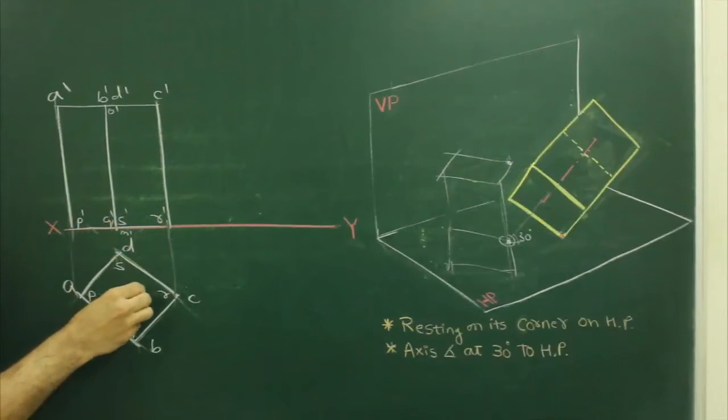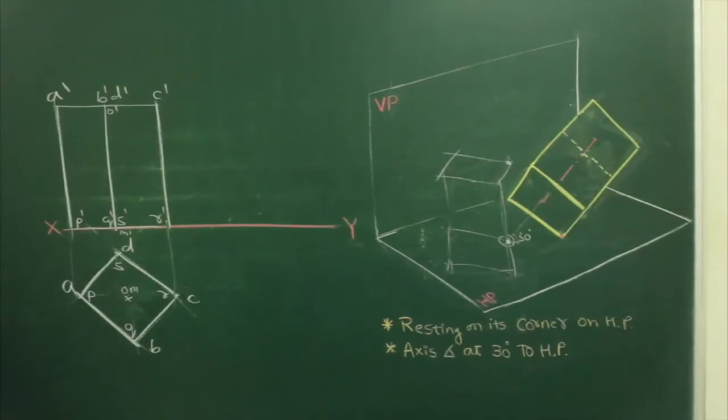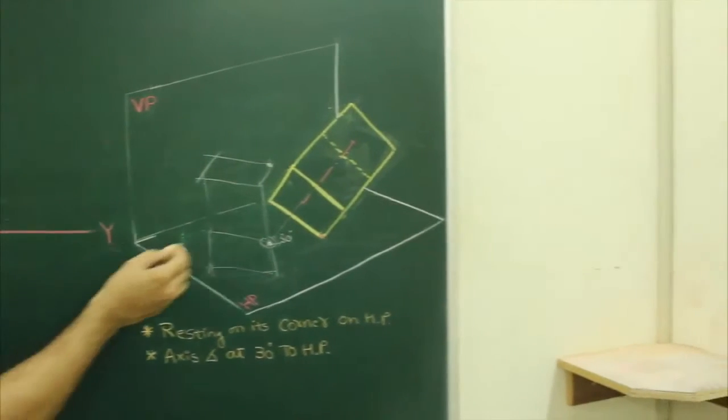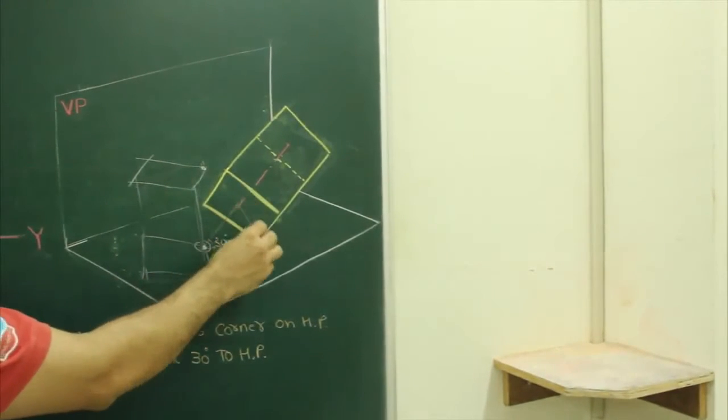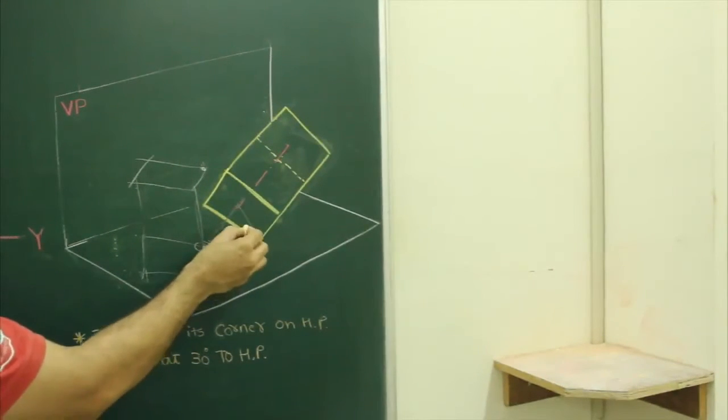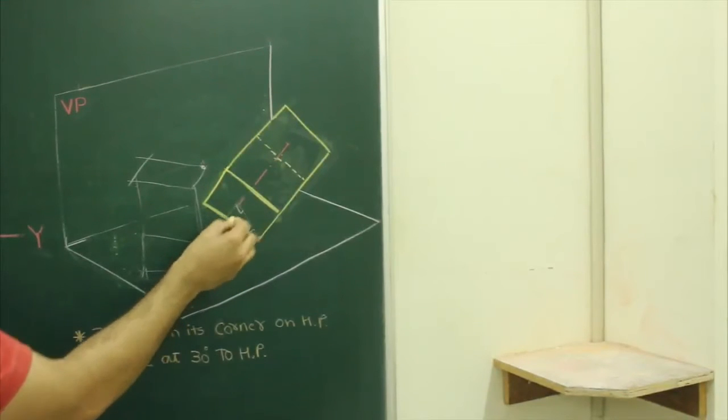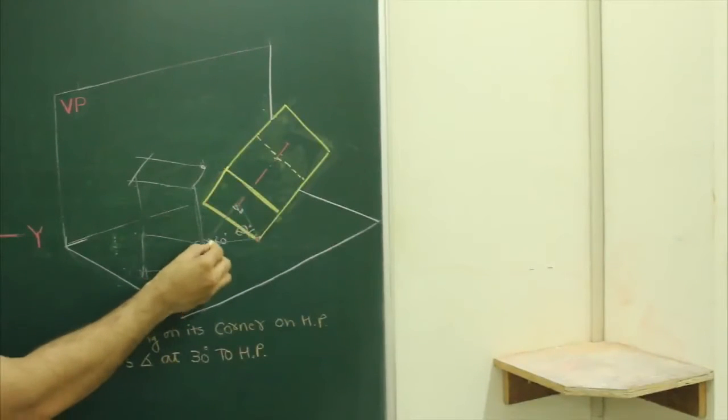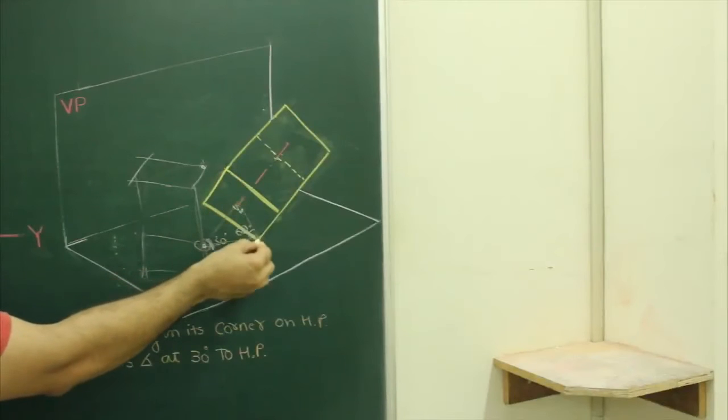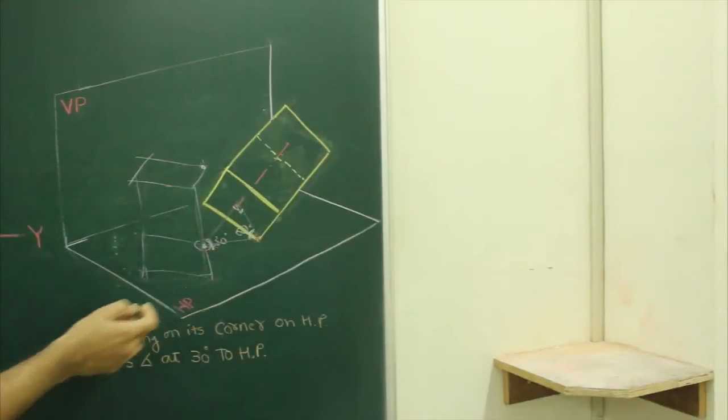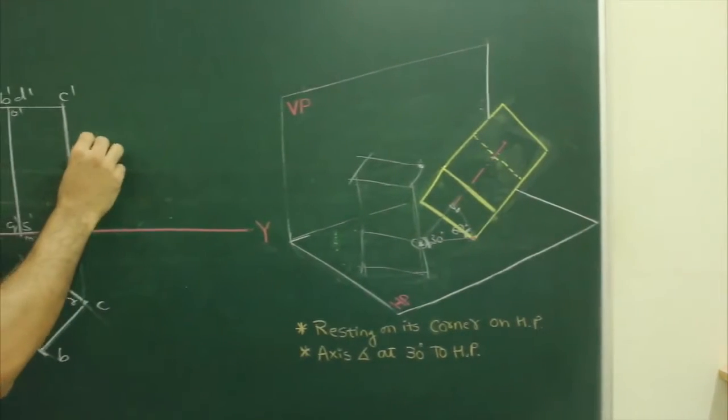This is axis O. Now the axis is inclined 30 degrees to HP. If you see the main diagram, if the axis is inclined 30 degrees, the base will be inclined at what angle? 60 degrees, because this is 90. If the axis is inclined 30, this is 90, so this will be inclined 60 degrees. So what we will do, we will draw 60 degrees from here.